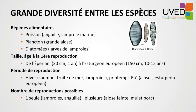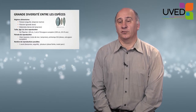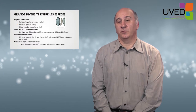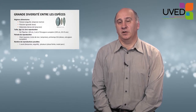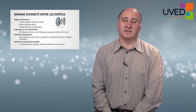These species are very diverse, not only in their form but also in their diet. Some of them feed on fishes — lampreys during the marine phase feed on fishes, as do salmons once they are big enough, or eels. Others feed on smaller individuals or plankton such as the blueback herring. And others feed on small algae and diatoms, which are eaten by lamprey larvae during the period they spend in freshwater to grow.